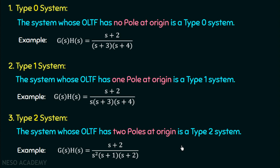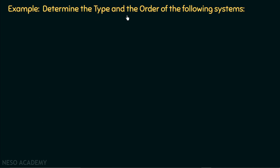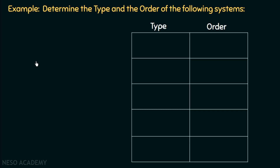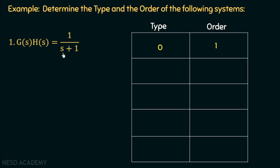We will now discuss the order and the type of system with the help of examples, using a table to fill in type and order. The type of a system is the number of poles present at the origin, and the order is the highest power of s in the transfer function. Example 1: G(s)H(s) = 1/(s+1). The type is zero — no pole at the origin. The order is one because the highest power of s is 1.